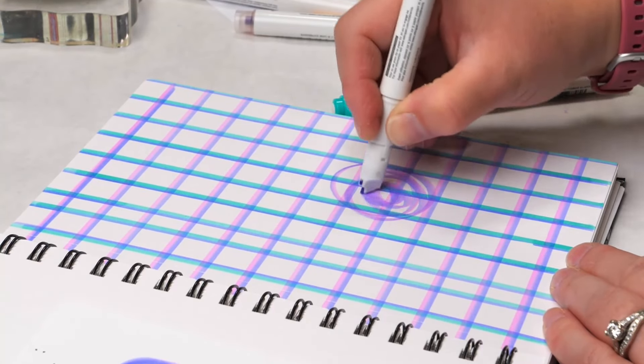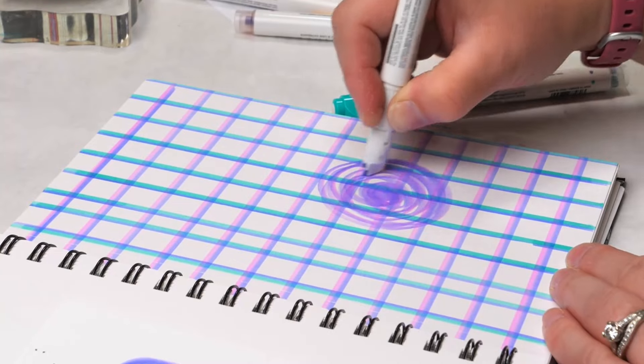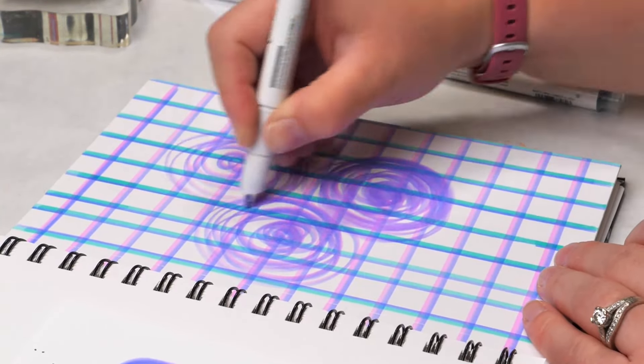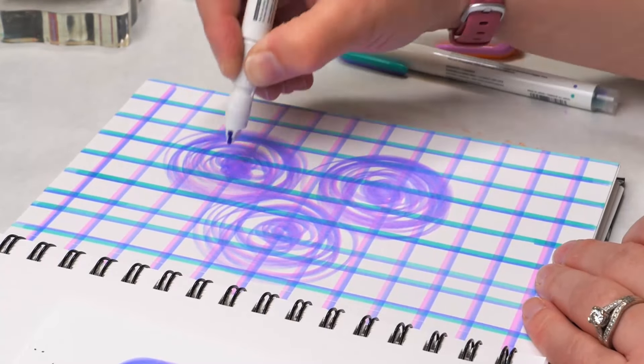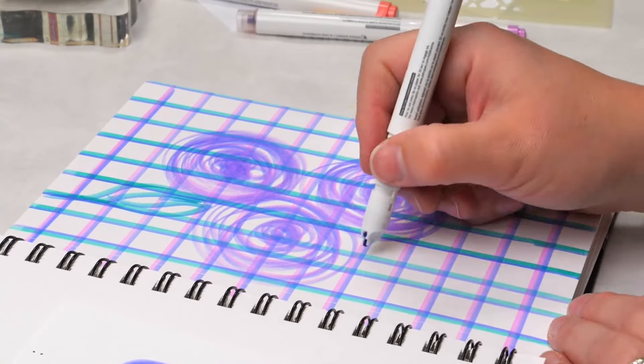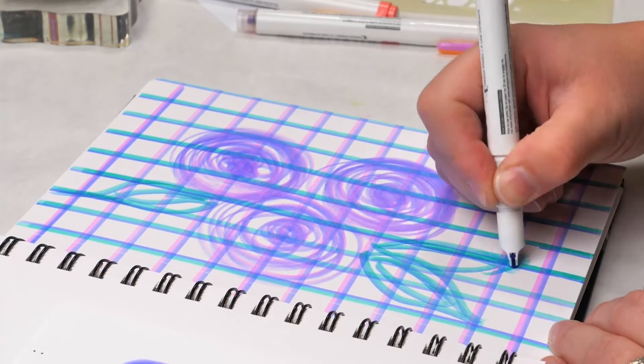But then I was curious to see what would happen if I layered the Mildliner Mix pens on top of the grid background. Using the same technique as I did on the cards but in a larger size, I added in those scribbly roses again. It took a bit more work and a few more layers to have them pop a bit more, but I'm really happy with the results.